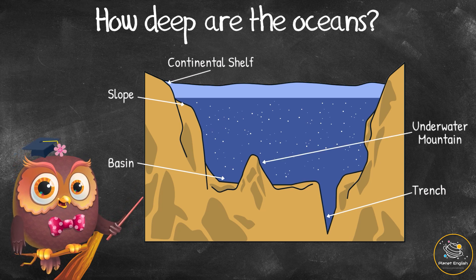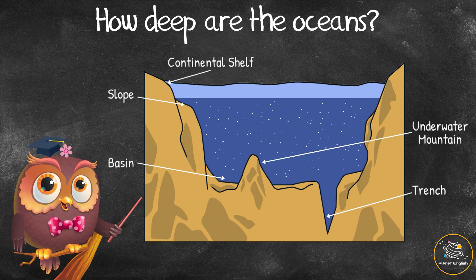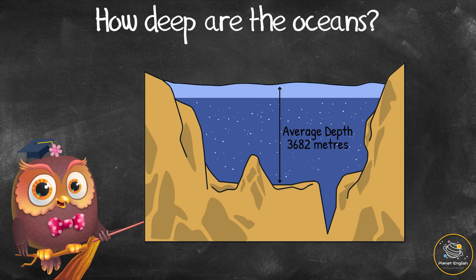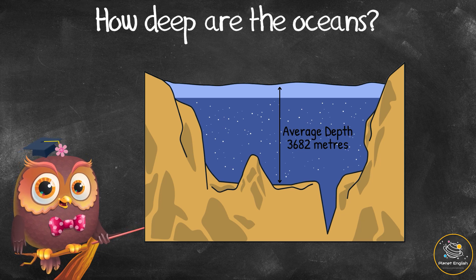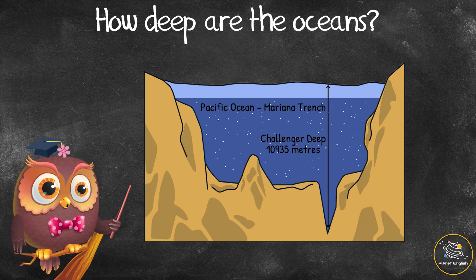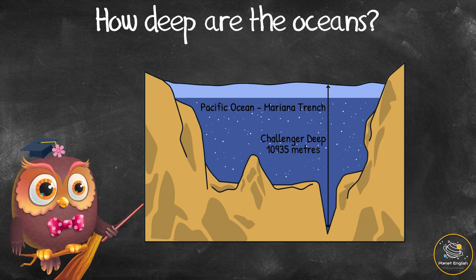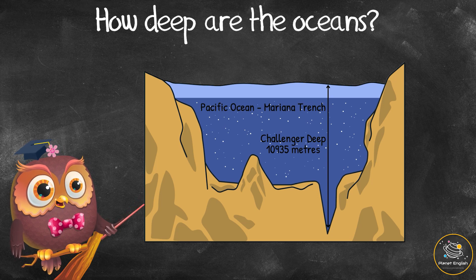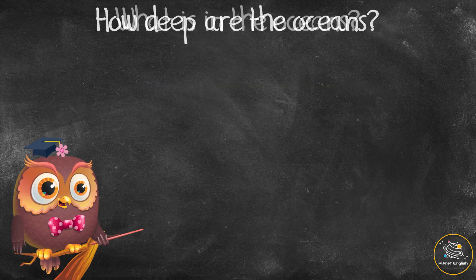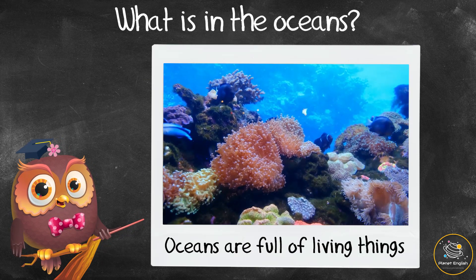Some oceans have underwater mountain chains called oceanic ridges. Because the ocean floor is not flat, ocean depths vary, but the average depth of the ocean is about 3,682 meters. The deepest ocean is the Pacific Ocean, and its deepest part is found in the Mariana Trench at a place called Challenger Deep, which is about 10,935 meters deep.